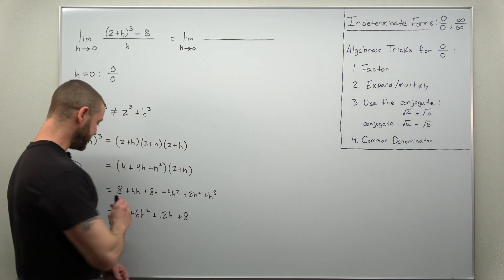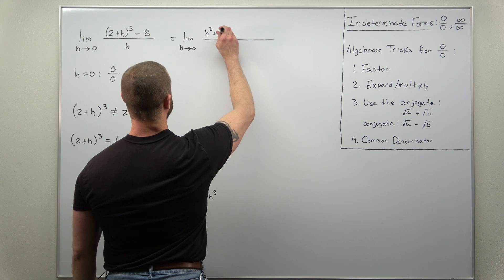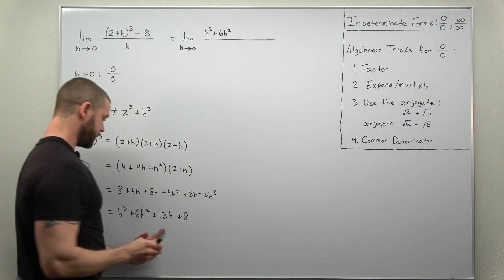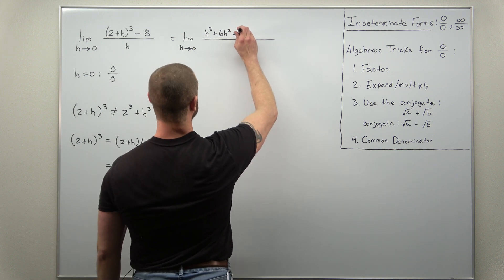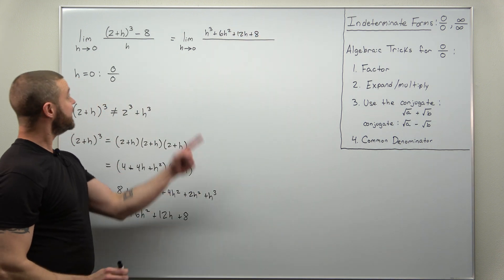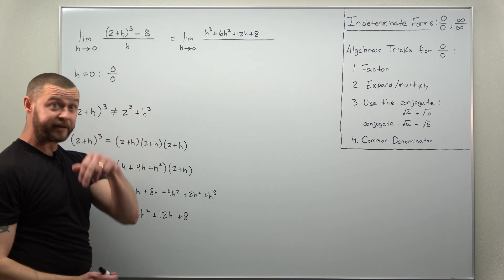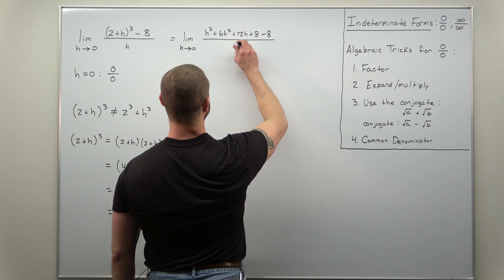We have the terms we just expanded: h³ + 6h² + 12h + 8. And don't forget you have the minus 8 after those terms, and that is all over h.